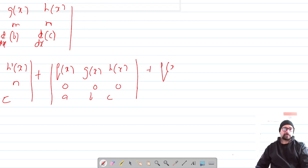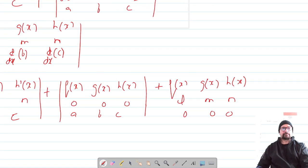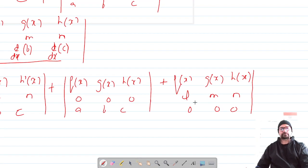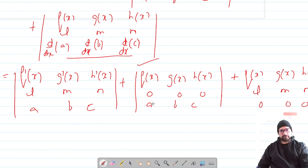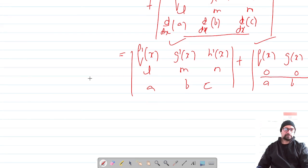Plus, this once again f(x) g(x) h(x), which is l m n, and the differentiation of a b c is zero. For this determinant, the second row is zero, so the value of this is zero, and value of this is zero, so we are only left with the first one.